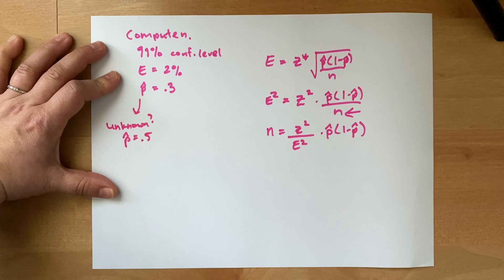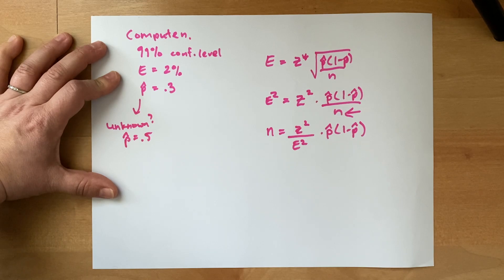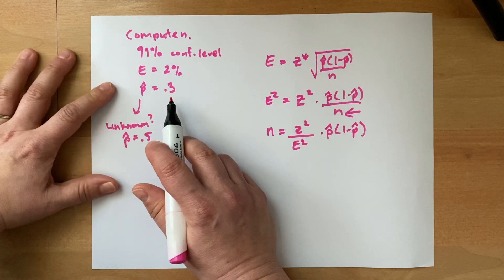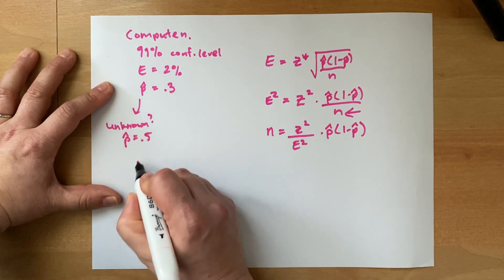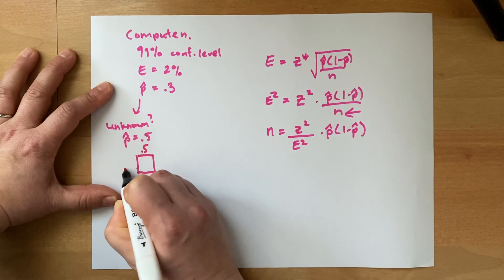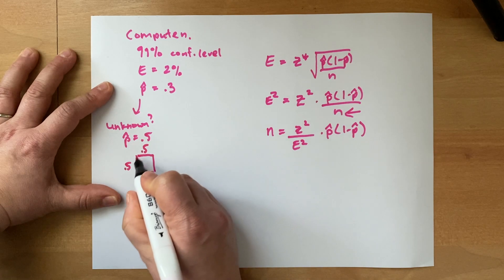To get a smaller sample size, you hope to have a guess. And that can be explained by looking at a square. A square that has the same sides, same length of sides, gives you the biggest area.